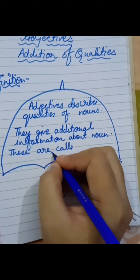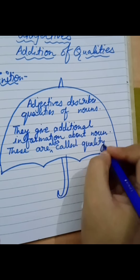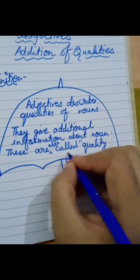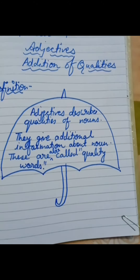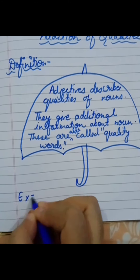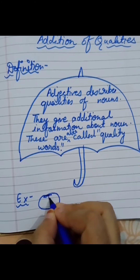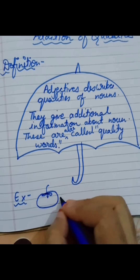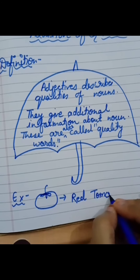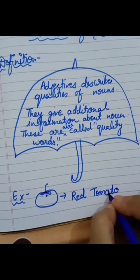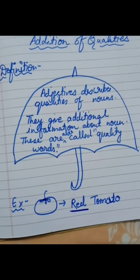Adjectives are also called quality words. Now write some examples. There is a tomato — we can write 'red tomato.' The underlined word 'red' is the quality word or adjective.